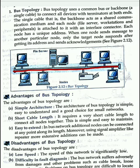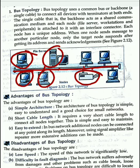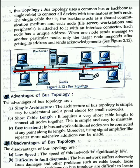In bus topology, if you are connected to the network, there are nodes. A node is always a computer. It can also be a printer or a file server — these are also nodes. In bus topology, there is a main cable, and all computers and nodes are connected to that main cable.